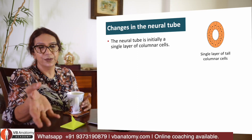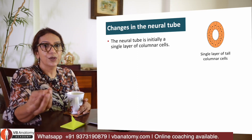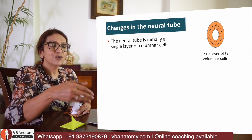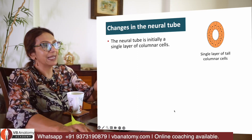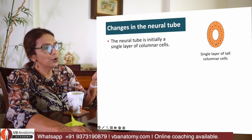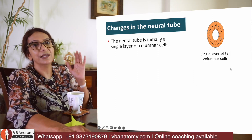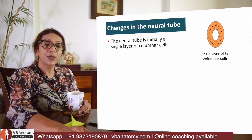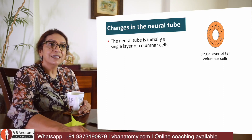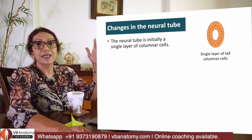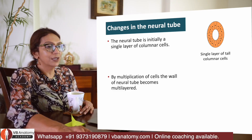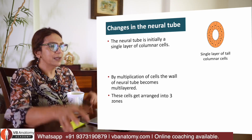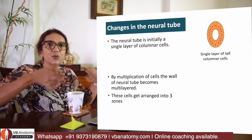This is a tube, so if you take a section of it, it looks like just a simple columnar epithelium layer of cells. These cells begin to multiply at a crazy pace — they multiply and begin to migrate outside.